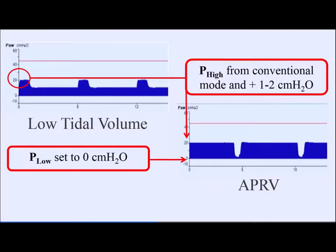Comparing mechanical ventilation waveforms: low tidal volume ventilation has brief inspiratory time and prolonged expiratory time. APRV is essentially flipped — longer inspiratory time, shorter expiratory time. Take your low tidal volume airway pressure and add 1–2 cm H₂O to get P-high. P-low is set to zero cm H₂O — counterintuitive, since we don't want lungs to collapse to zero. The key is setting T-low (time at P-low) brief enough that the lung never fully collapses to that P-low.